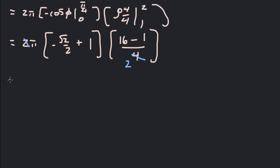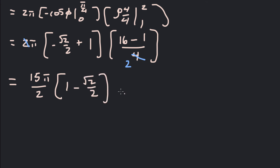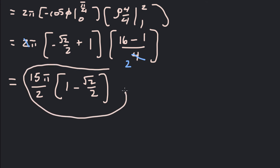So our final answer is 15 pi over 2 times the quantity 1 minus square root of 2 over 2. That is the value of the triple integral. Thank you.